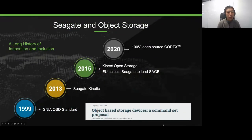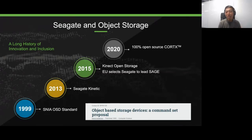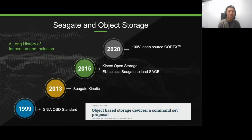You might be asking how long Seagate has been working on object storage. Seagate has actually been in object storage since 1999. David Anderson, one of our researchers, proposed some of the first commands for object storage. In 2013, we produced a kinetic drive with an object storage interface. In 2015, we published that standard. The EU also selected Seagate to lead SAGE, a research consortium, to further open research across Europe.